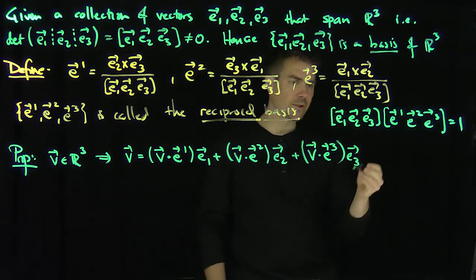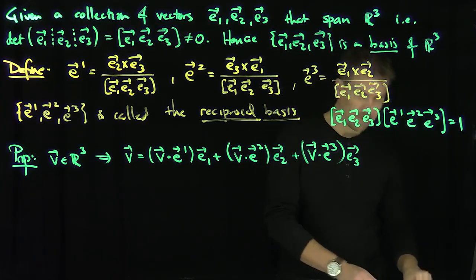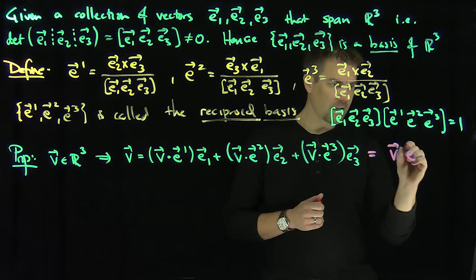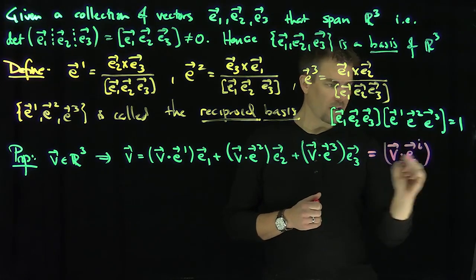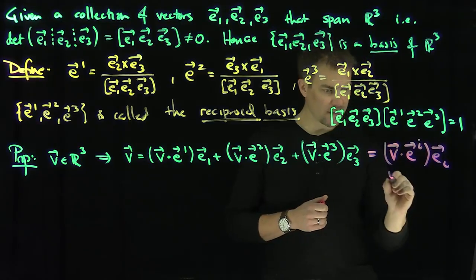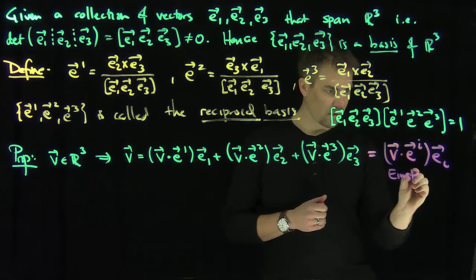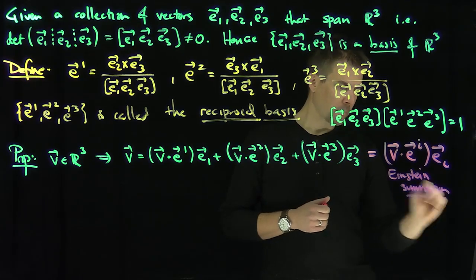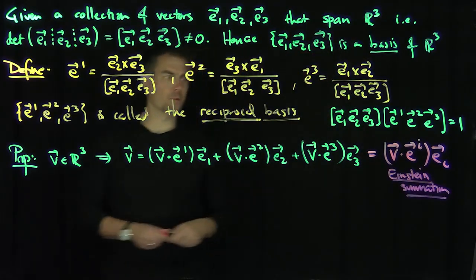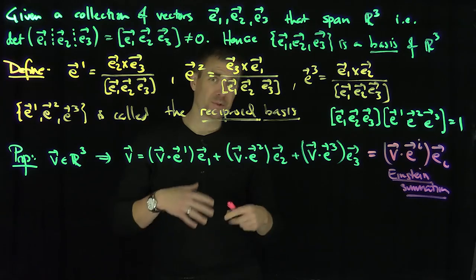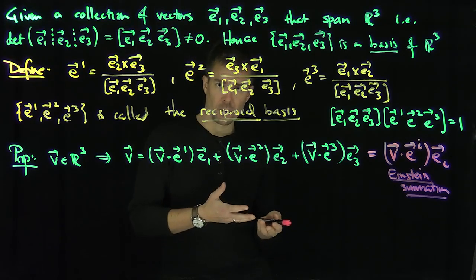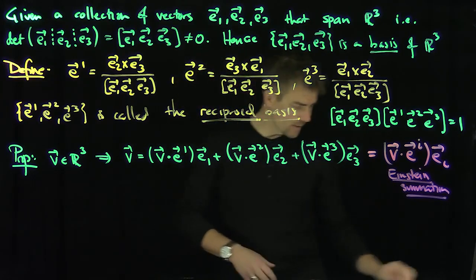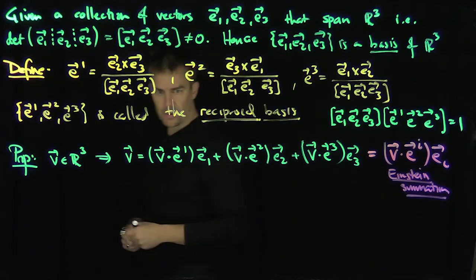And so this hints at our Einstein notation. So if we used the Einstein notation, this would just be V dot Ei upper, and then Ei lower in Einstein notation. This is Einstein summation, that's the Einstein summation convention. In other words, the repeated index, one upper, in the more parlance lingo, one contravariant component and then one covariant component that share the same index, you sum over the shared index. That's the Einstein summation convention.